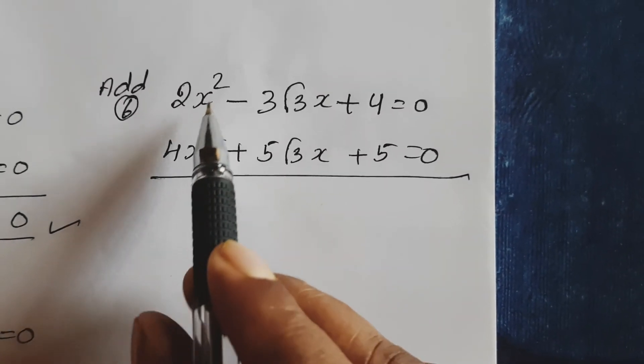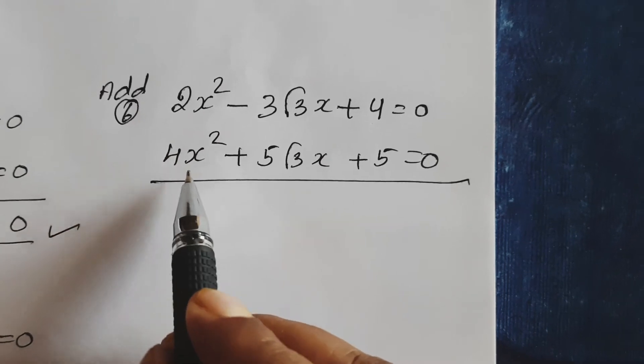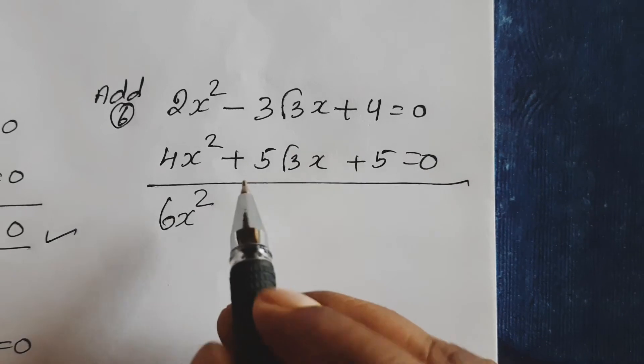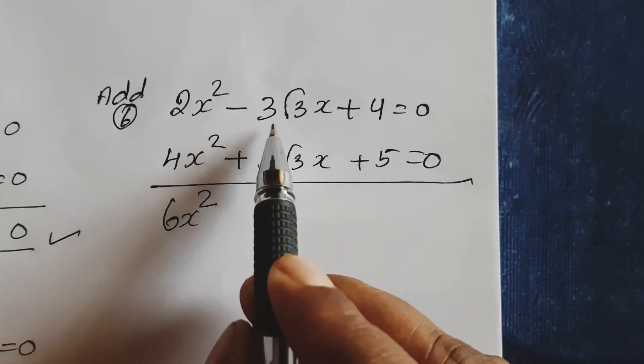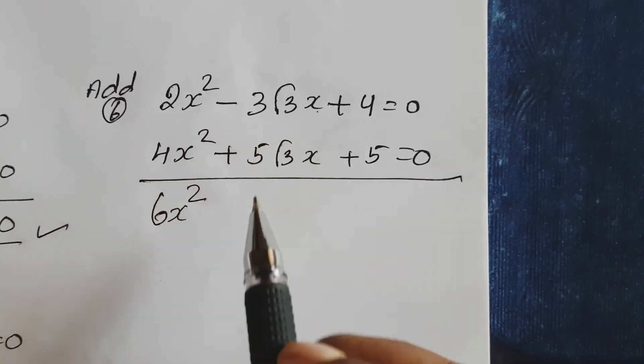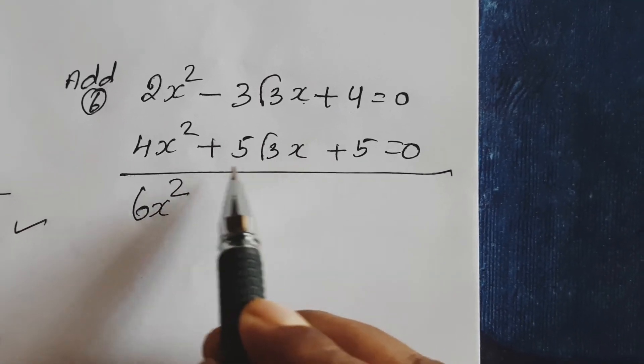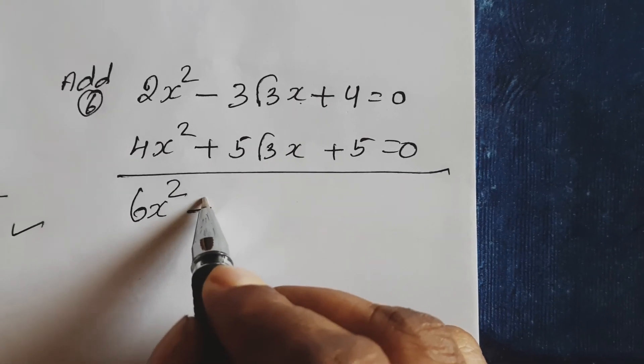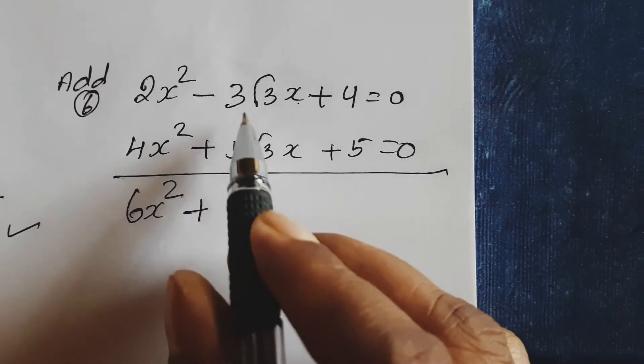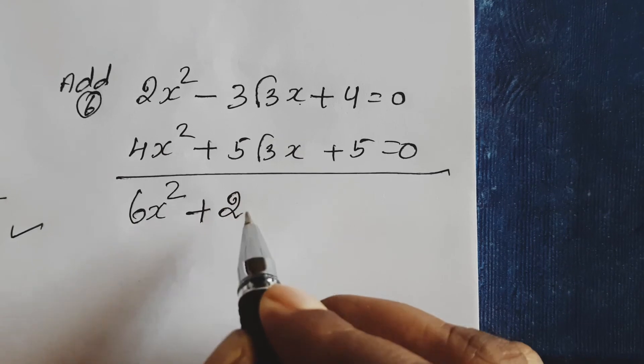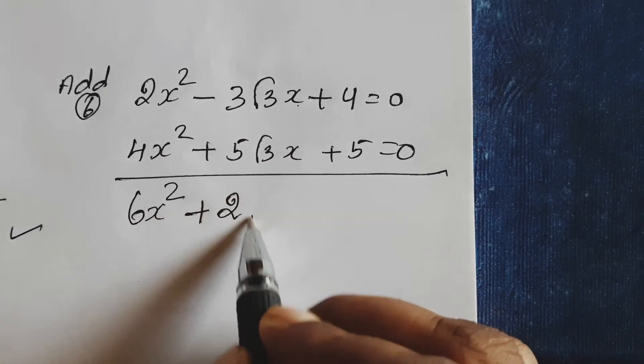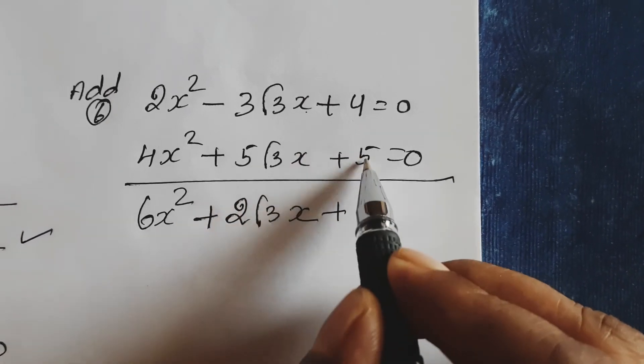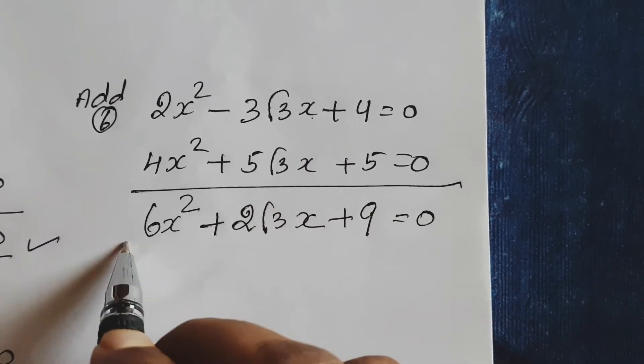Next, 2x² plus 4x², so 6x². Here minus 3√3x plus 5√3x. 5√3x has higher value and is plus, so sign becomes plus. So 5 minus 3, 2, same term, so 2√3x. Plus 4 plus 5, 9 equal to 0.